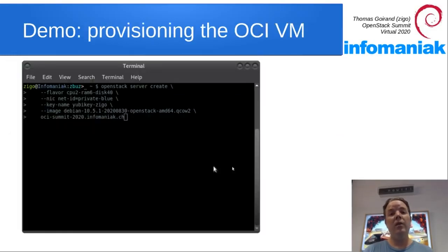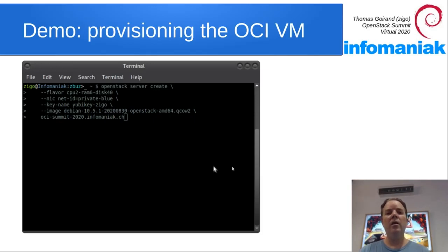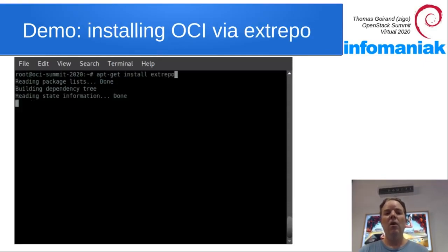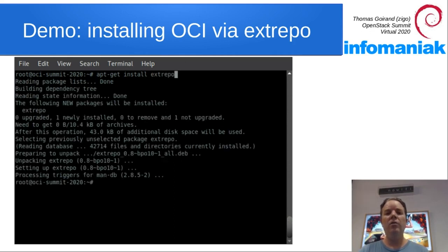Instead of explaining for hours how it works, I decided it was better to just show you. So let's start with a bare VM and install OCI. All of OCI is available through extrepo, including all of the packages, including the ones for Puppet.